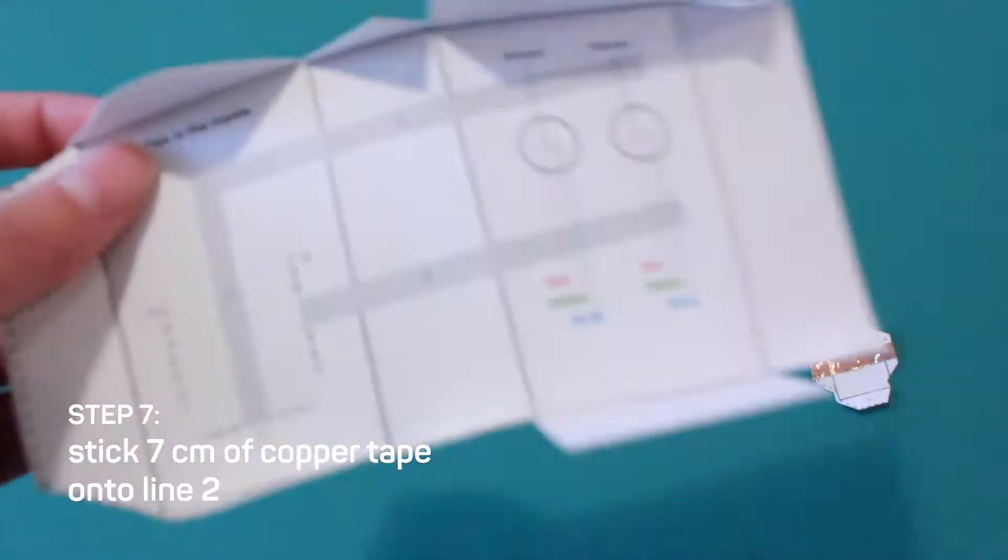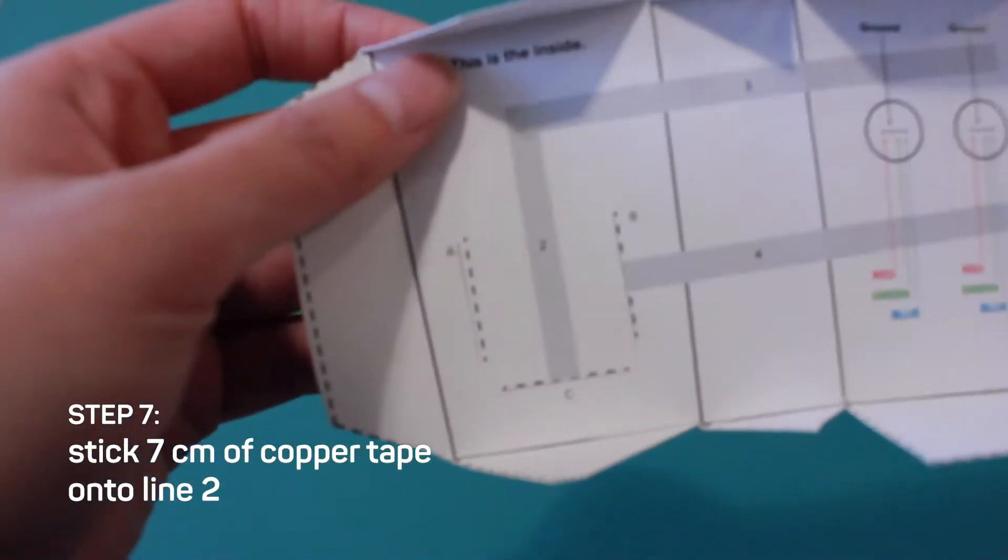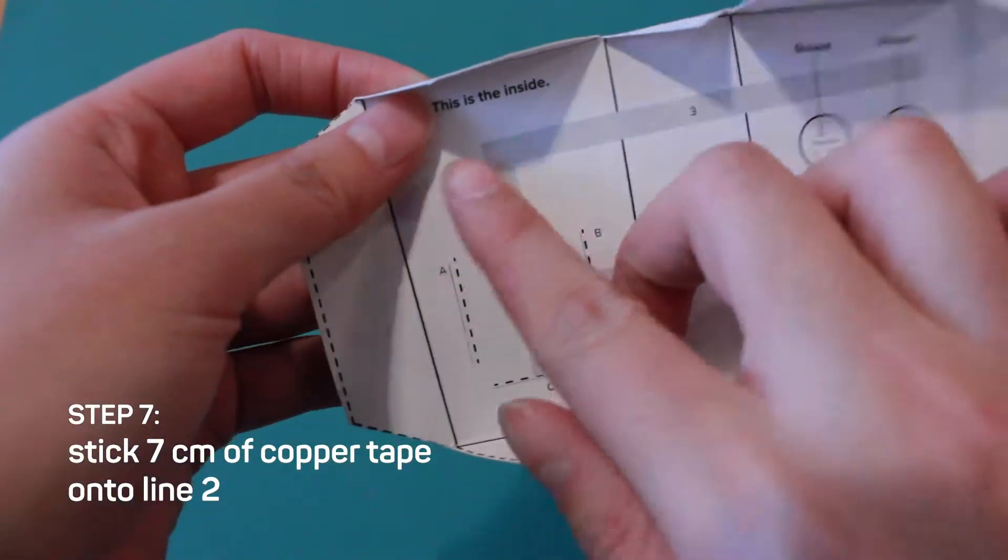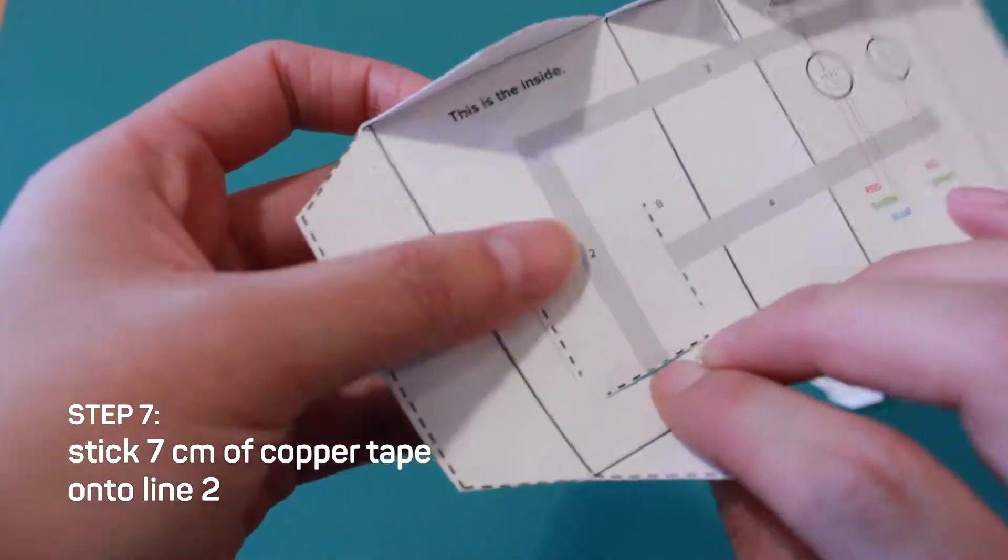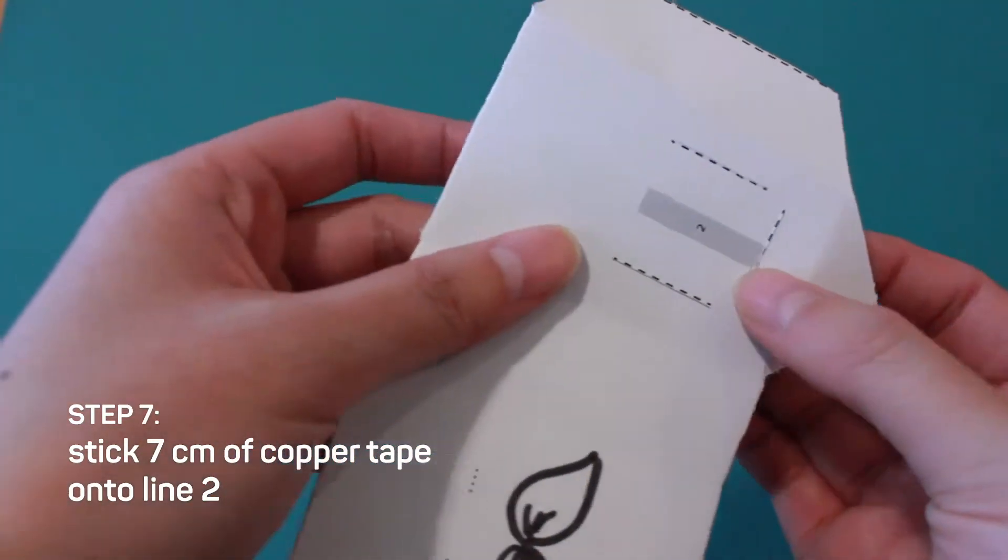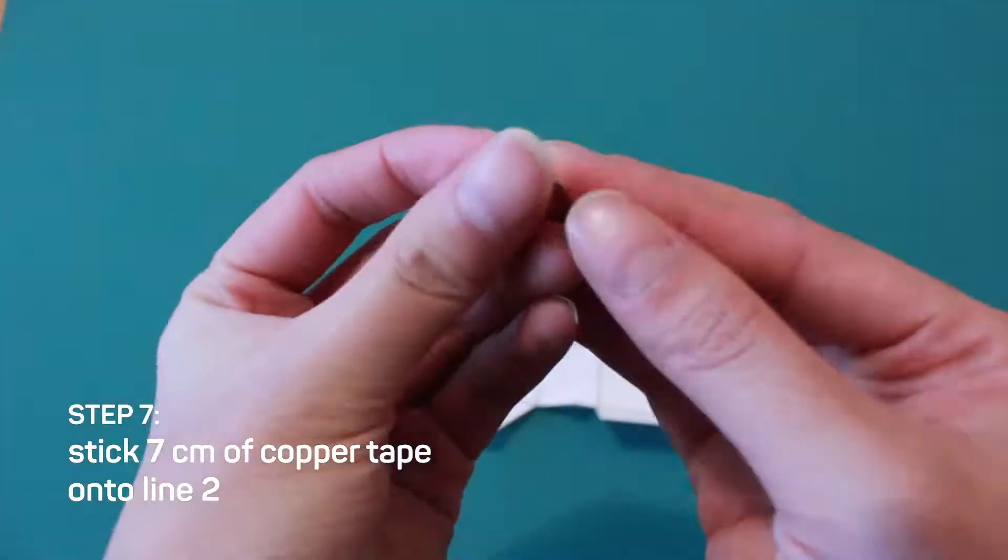Step seven, get ready to stick your copper tape onto line two. This line continues on the front of your template. Just slip the copper tape into slit C and tape it down at the front.